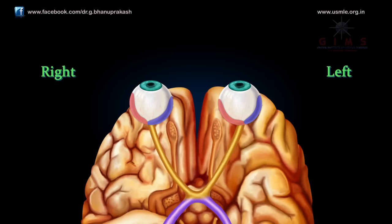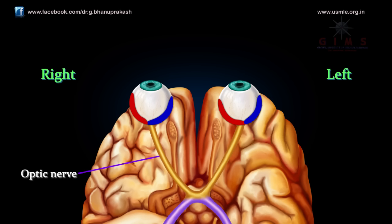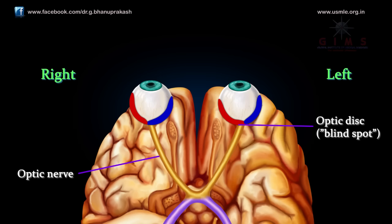Now let's examine the pathways from the retina into the brain. This diagram shows a view of the base of the brain as seen from below. Note that in this view the position of the two eyes is reversed. The axons of retinal ganglion cells exit the retina via the optic nerve. The optic nerve exits the eye in a region called the optic disc. Because there are no receptors in this region, nothing can be seen in the corresponding part of the visual field. This blind spot does not appear as a dark spot.